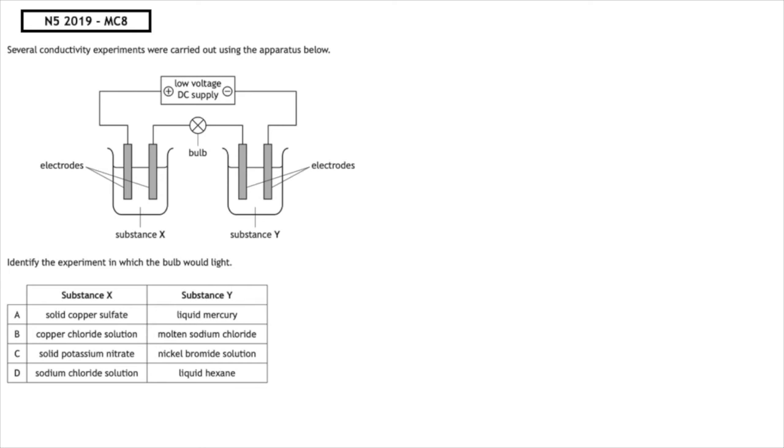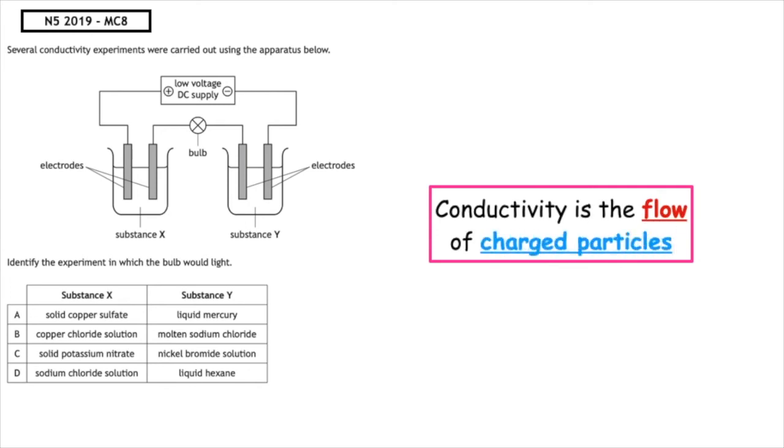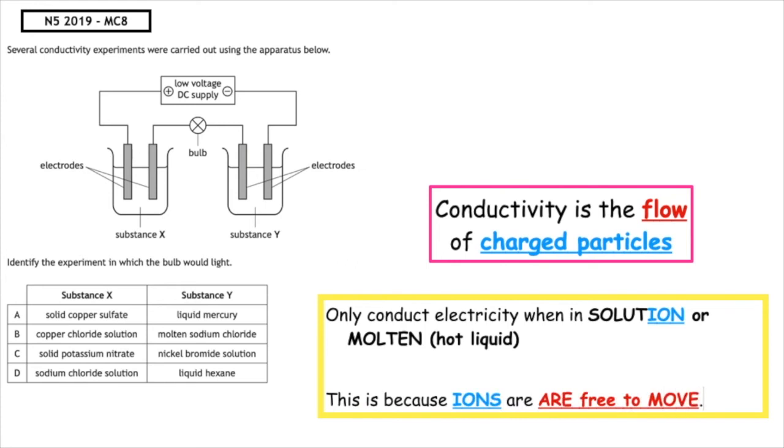This past paper question is from the National 5, 2019, multiple choice 8. Several conductivity experiments were carried out using the apparatus below. Identify the experiment in which the bulb would light. Now remember, conductivity is the flow of charged particles. So what we need to make sure is that they only conduct electricity when in a solution or when molten and this is because the ions are free to move. So when we're looking at A, we've got solid copper sulphate. The ions would not be free to move, so it would not conduct electricity. For B, we've got copper chloride solution. Remember, solution means ions, which means that the charged particles would be able to flow. And then we also have molten sodium chloride, which means that it's going to be hot liquid and the ions again would be free to move. So the correct answer to this is multiple choice answer B.